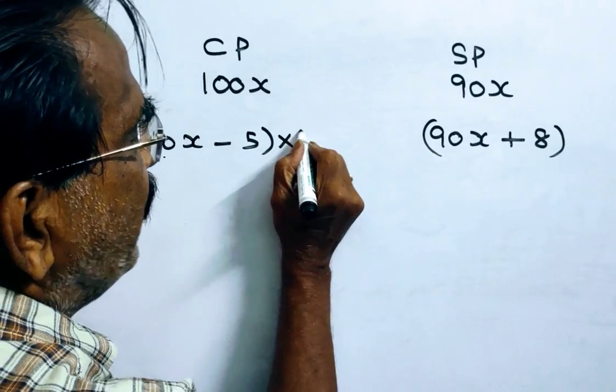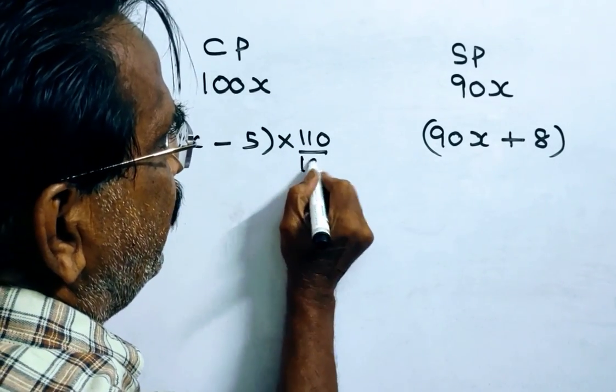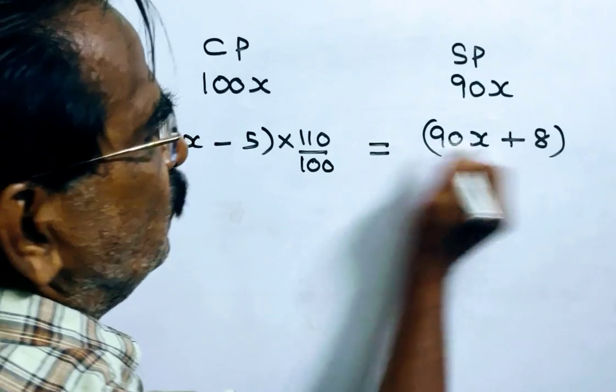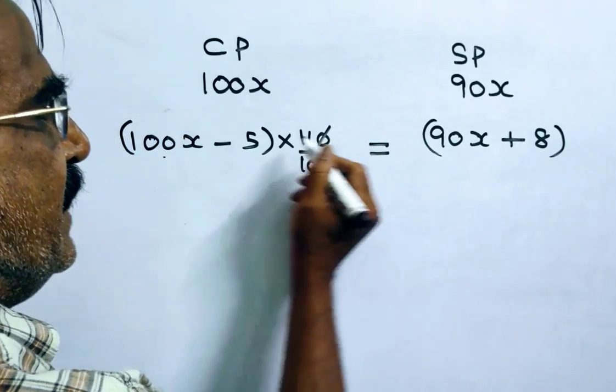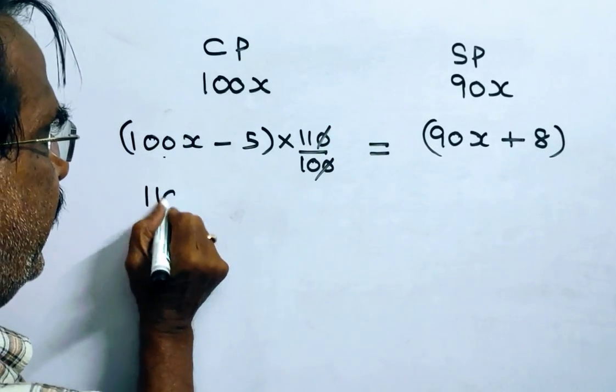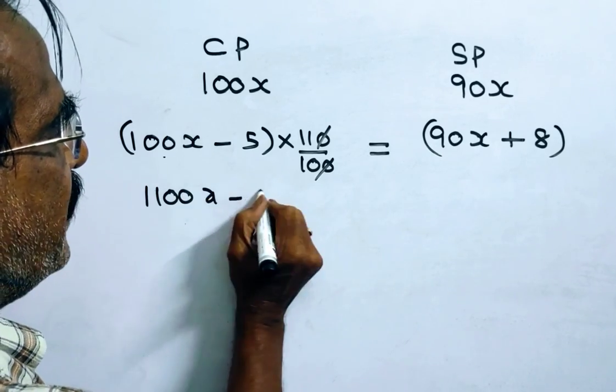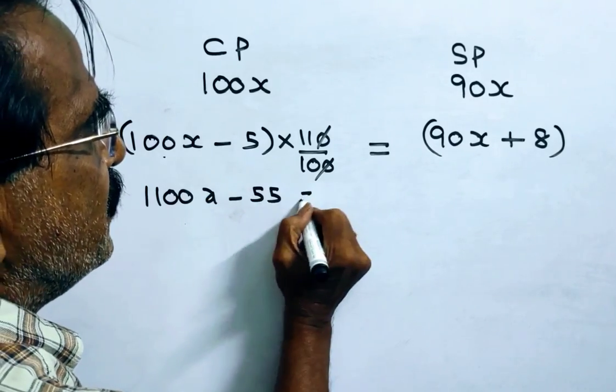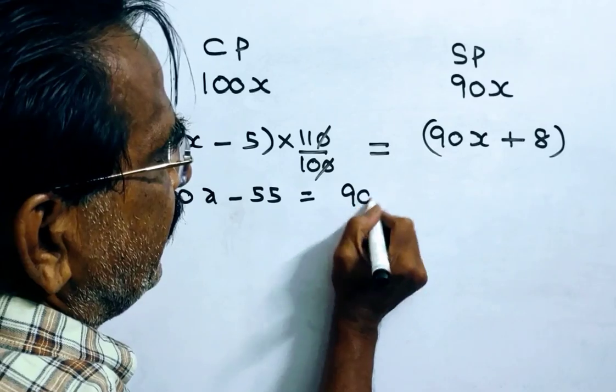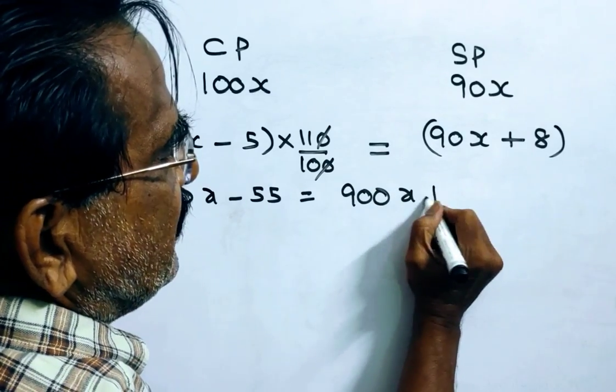So, this into 110 by 100 is equal to this selling price. See, 11 into 100, 1100x minus 55 is equal to 10 into 90, 900x plus 80.